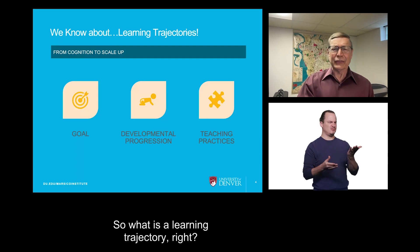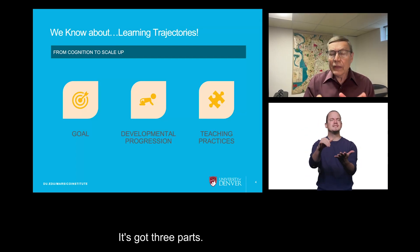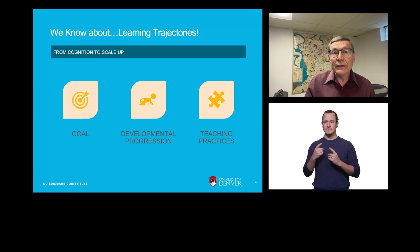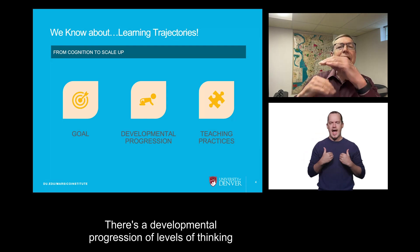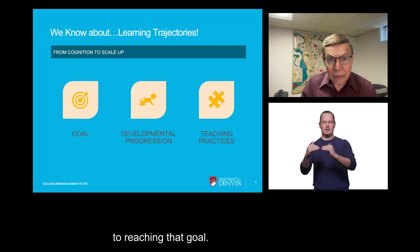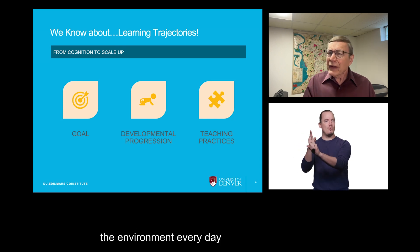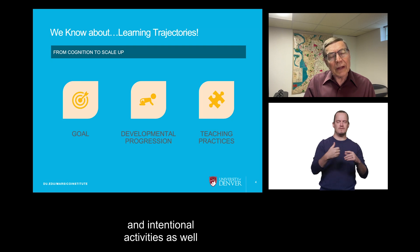So, what is a learning trajectory? It's got three parts. There's a goal in mathematics we want the kids to reach. There's a developmental progression of levels of thinking that most all kids follow on their way to reaching that goal. And then there are teaching practices, the environment, everyday and intentional activities as well.